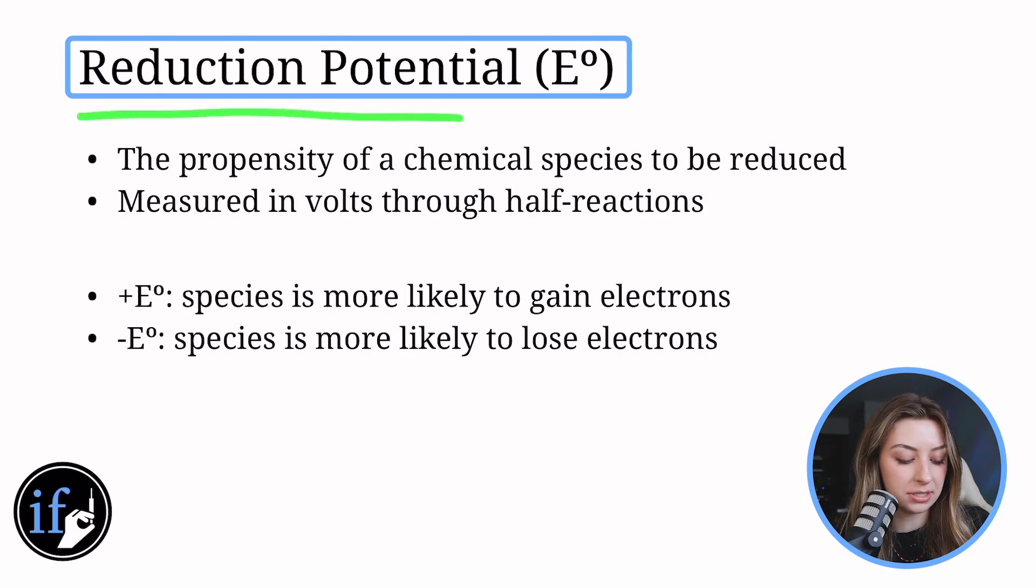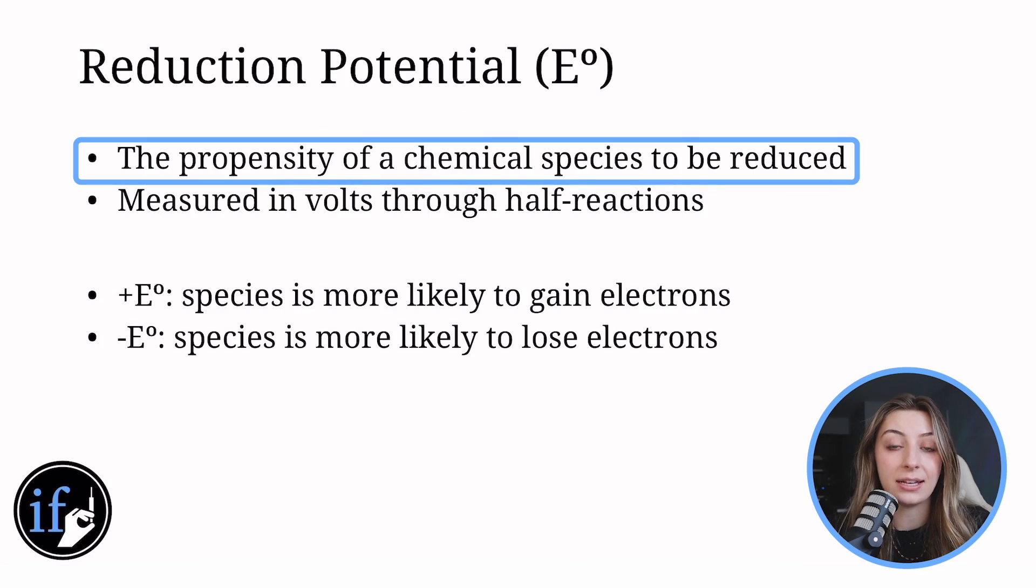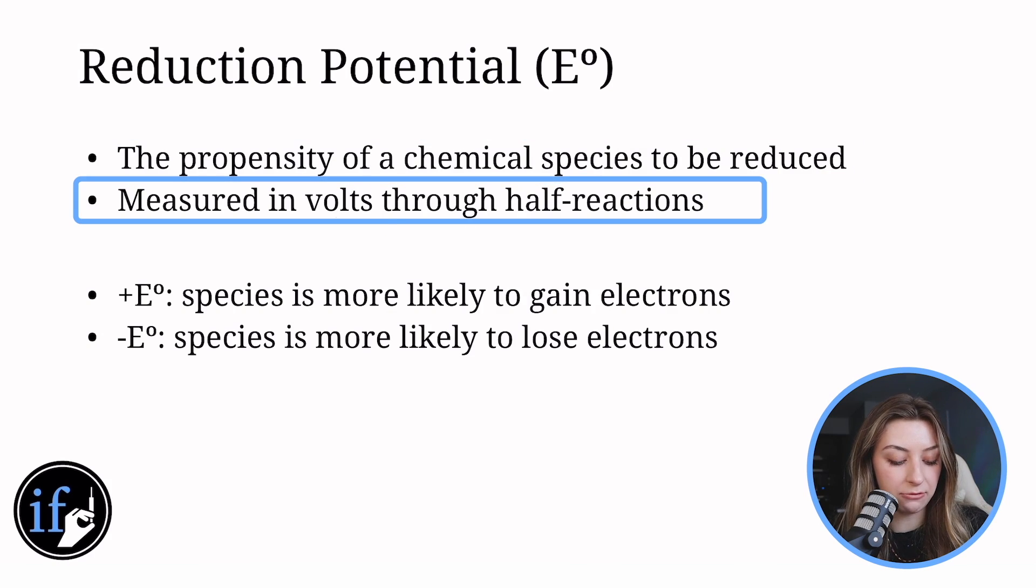So then we can add a little bit of math and numbers to quantify how much a chemical species wants to be reduced versus oxidized, and that would be called the reduction potential. Because the word reduction is in this word, this is the propensity of a chemical species to be reduced, so gaining electrons. It is measured in volts and you use the half reactions to place a number on a half reaction.